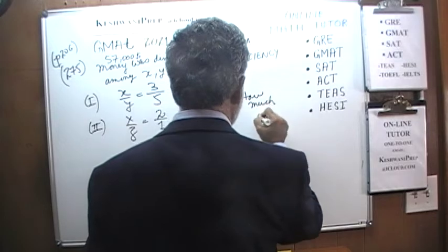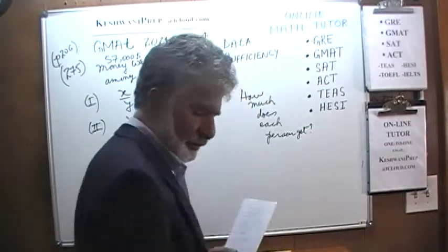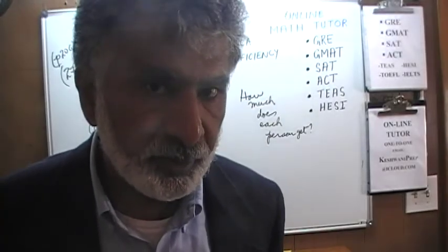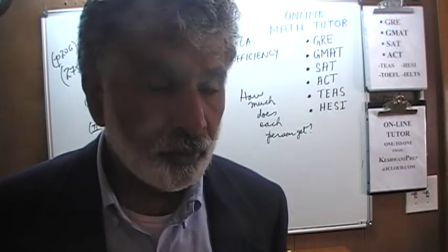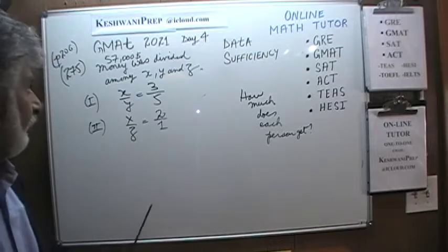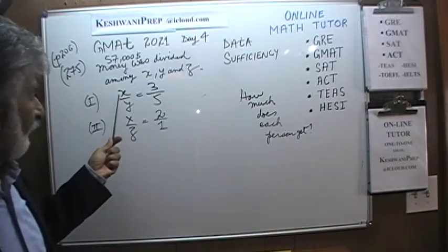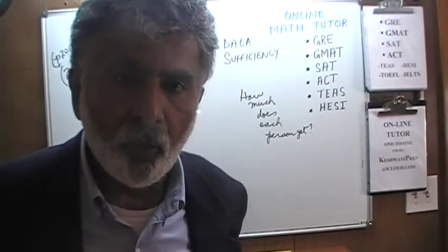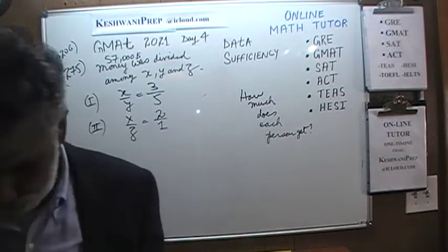This is a legitimate question that could appear as a multiple choice problem — I've converted a data sufficiency problem into a straightforward multiple choice. I want you to pause the video now and solve it yourself. 57,000 dollars divided among x, y, and z such that x to y is 3 to 5, and x to z is 2 to 1. How much does each person get? Pause the video, solve it, then resume.